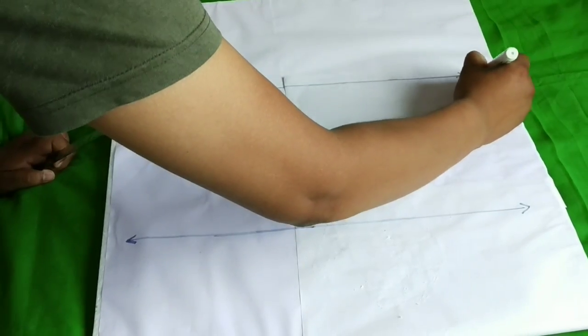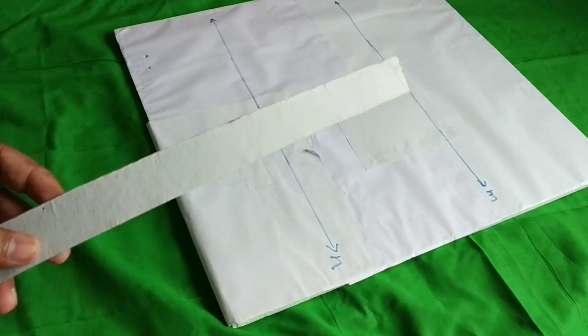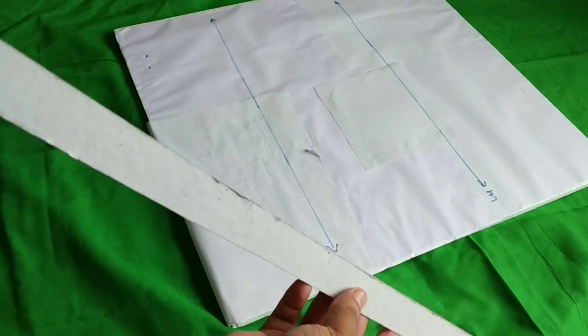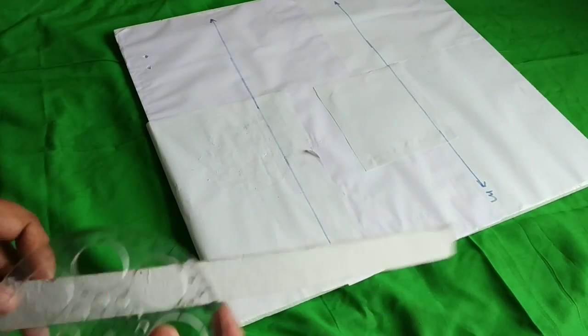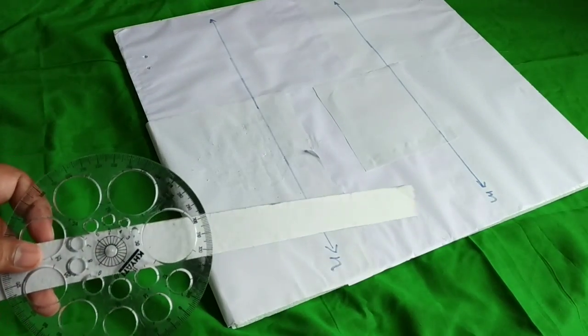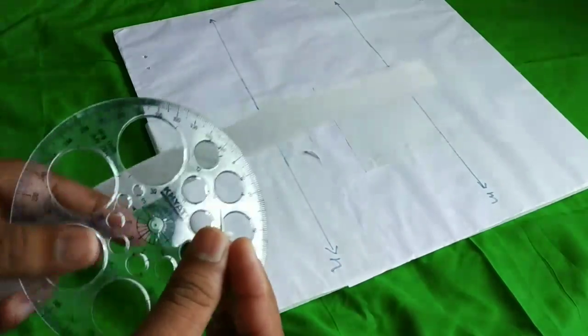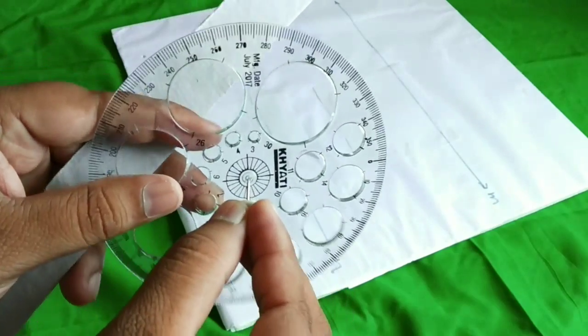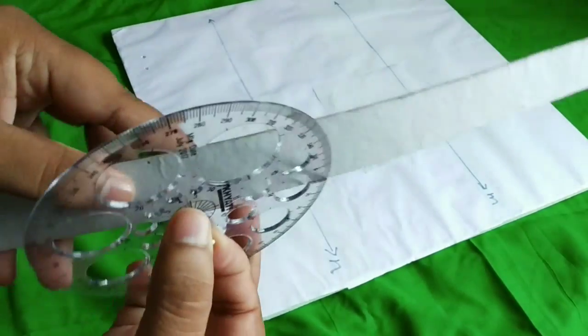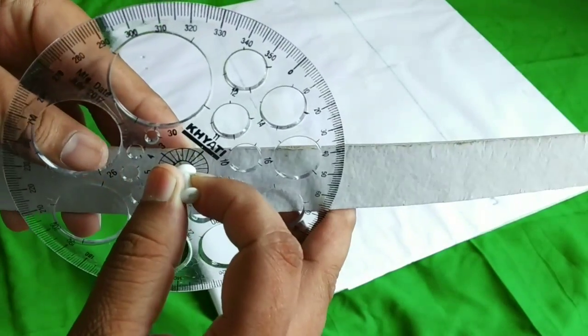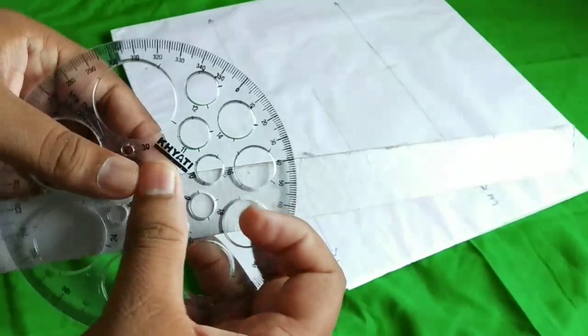Take one strip of cardboard like this, and then we have to set a 360-degree protractor using a thumb pin like this. We should set the thumb pin little bit upside. I have already made a small hole on the center of the protractor using a hot needle, and we have to set it a little bit upside like this.